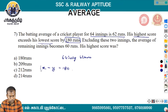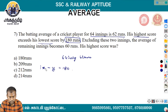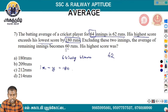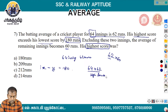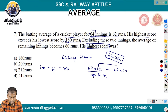The batting average of a cricket player for 64 innings is 62 runs. He has a highest score and a lowest score. Excluding those two innings, the average for the remaining 62 innings is 60. The total for 64 innings is 64 into 62, and the total for 62 innings is 62 into 60.